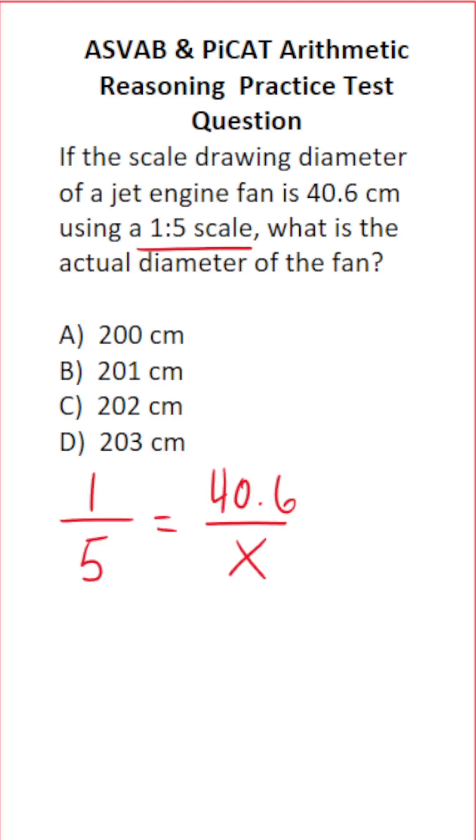To solve proportions, you use cross multiplication. 1 times x is just x. This equals 40.6 times 5.